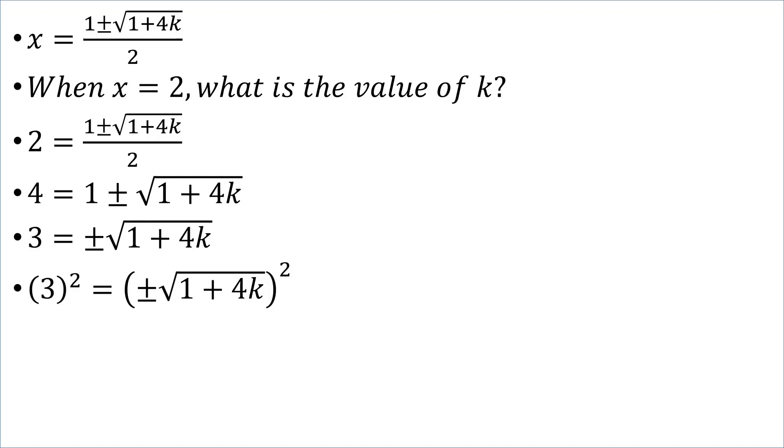If we square a positive, we get a positive. If we square a negative, we also get a positive. So, we'll have that 3 squared, which is 9, is equal to 1 plus 4k. Transposing the 1, subtracting it from 9, we get 8. Transposing that 4 and dividing 8 by 4, we get that k is 2.